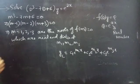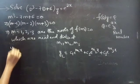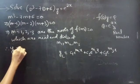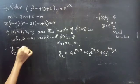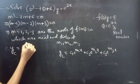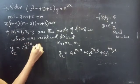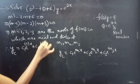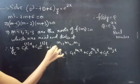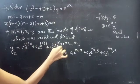So the complementary function is yc = c₁e^(x) + c₂e^(2x) + c₃e^(-3x).